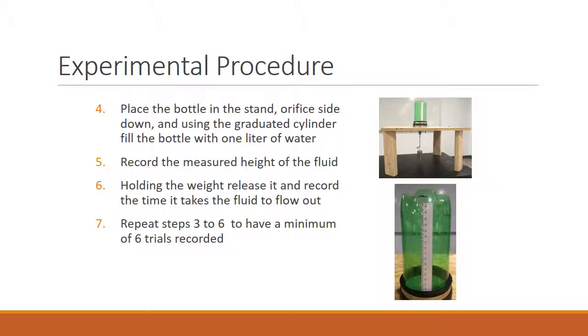At this time, record the height at which the fluid is at and get the stopwatch ready to record the time it takes to empty. With the fluid in the bottle, lift the hanging weight slightly to release some tension in the string. Release the weight straight down. This will remove the stopper and allow the fluid to start flowing and time to be recorded. Repeat steps three to six until a minimum of six trials are recorded.